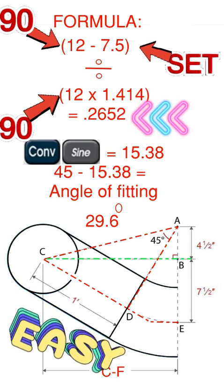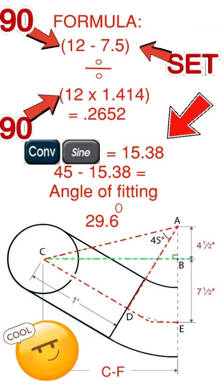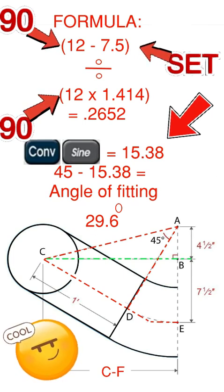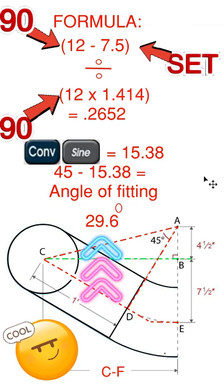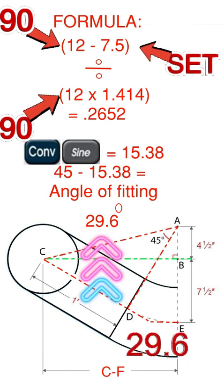You should be looking at 0.2652. That's the sine number. Press convert sine. That equals 15.38 degrees. That's not your answer though. You're going to take the 15.38 off of 45 and your angle of fitting is 29.6 to complete that offset.